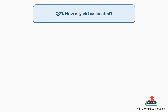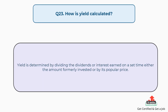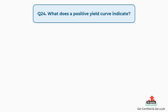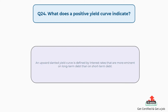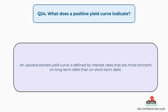Question number twenty-three: how is yield calculated? The answer is, yield is determined by dividing the dividends or interest earned over a set time period either by the amount originally invested or by its current market price. Question number twenty-four: what does a positive yield curve indicate? The answer is, an upward-sloping yield curve is defined by interest rates that are higher on long-term debt than on short-term debt.